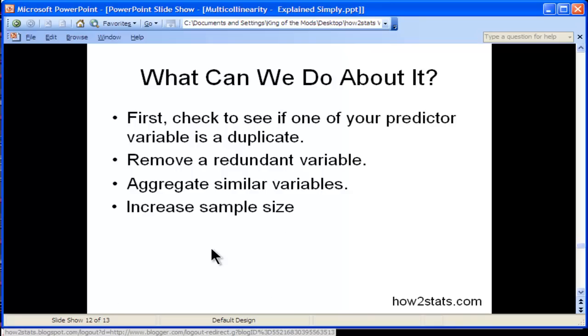Increasing sample size will help reduce the problems associated with multicollinearity. It won't reduce variance inflation factor or tolerance levels, but increasing the sample size will add more stability to the standard errors and the beta weights.